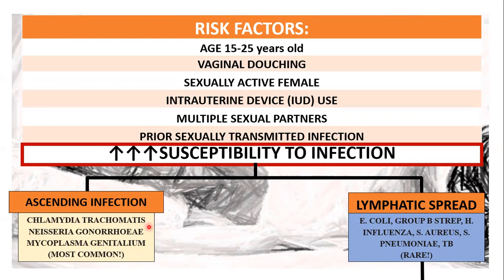Also, we have Mycoplasma genitalium. As for the lymphatic spread, this involves respiratory and gastrointestinal pathogens, including E. coli, group B strep, Haemophilus, S. aureus, S. pneumoniae, and TB. However, this is rare, so we'll be focusing more on the ascending infection.